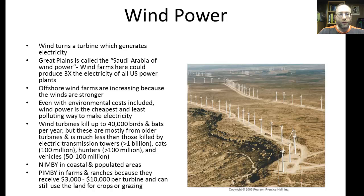In coastal and populated areas there's a NIMBY situation — 'not in my backyard' — where people don't want to see wind turbines when looking out to sea. On the other hand, on farms and ranches there's PIMBY — 'put in my backyard.' Farmers and ranchers can receive $3,000 to $10,000 per year per turbine, and the land can still be used for crops and grazing. Many go into business themselves, owning wind farms rather than just leasing land.